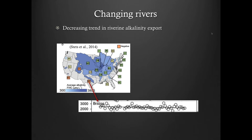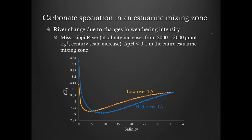Changing river chemistry can affect estuarine carbonate chemistry. If I take a simple simulation varying alkalinity level from 2000 to 3000 micromoles per kilogram — representing a century-scale 50% increase — this increase actually leads to a relatively small change in the pH levels in the entire estuarine mixing zone.